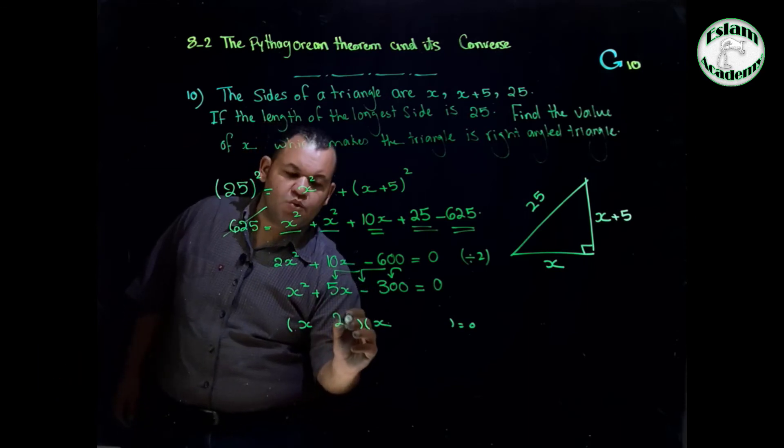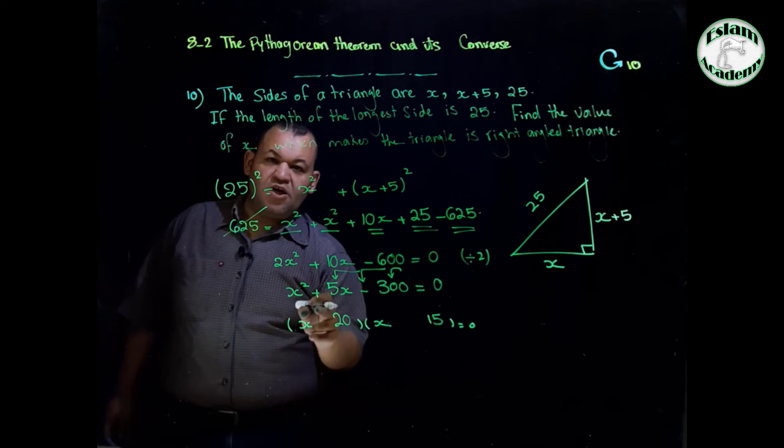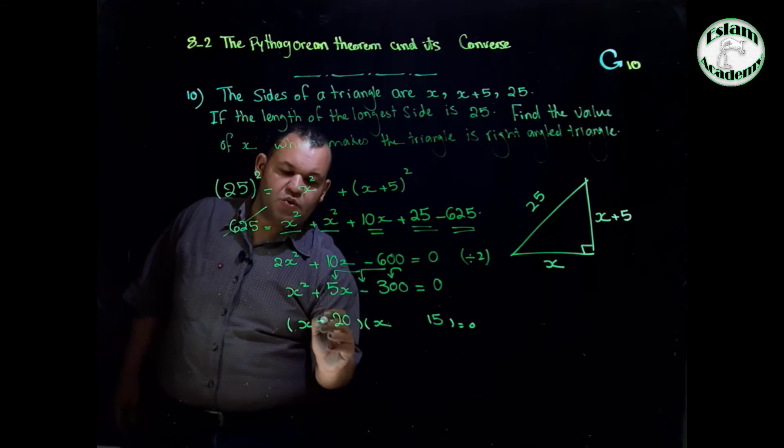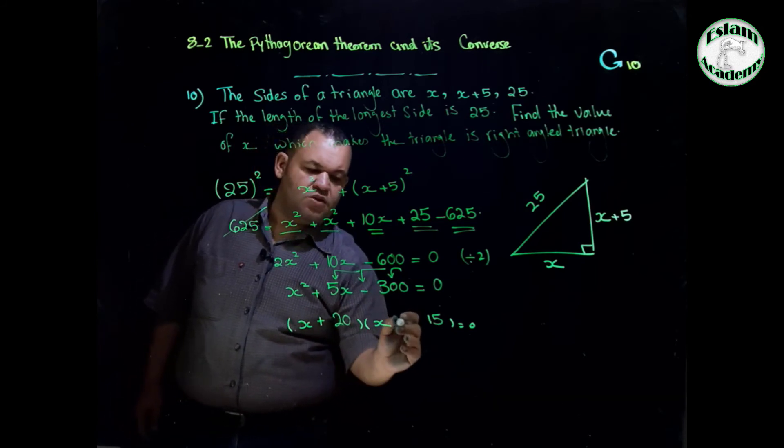You will find that the two numbers will be 20 and 15. The sign of the middle will be the sign of the greatest number so this 20 will be positive, and positive times negative equals negative.